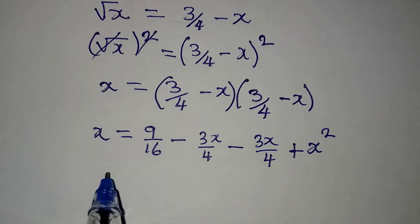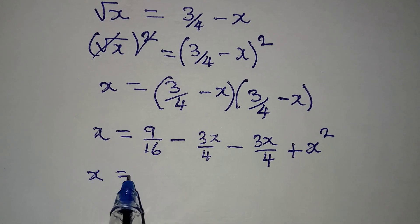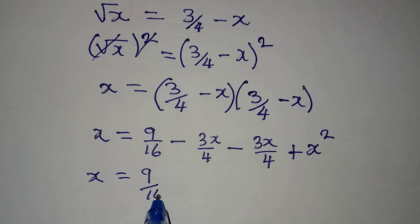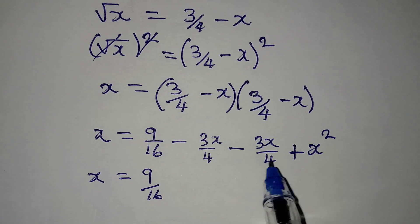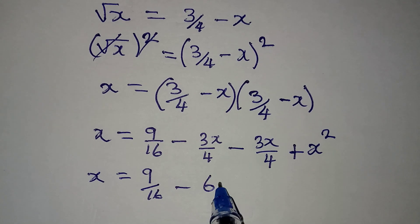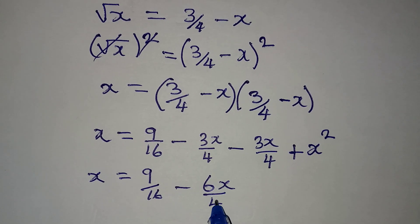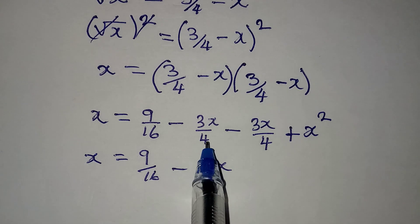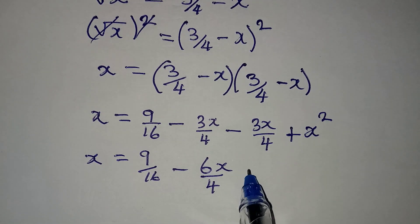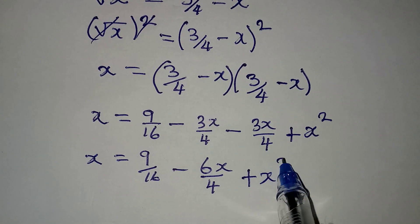Now, we have x to be equal to 9 over 16, then put this together, we have minus 6x over 4. I've put these two terms together, then plus x squared.